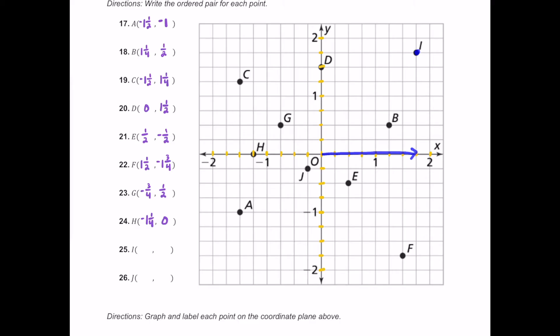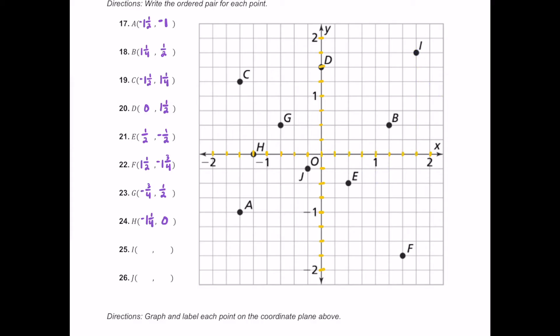I is located up here in quadrant one. Move to the right — that's positive one and three quarters — and then move up to positive one and three quarters as well. So it looks like it's the same amount in both directions: one and three quarters comma one and three quarters.